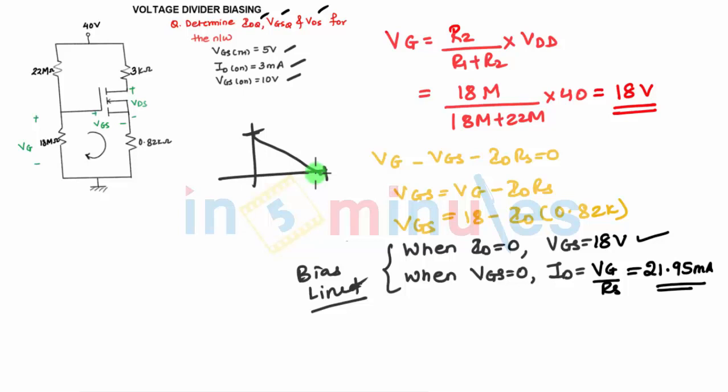Now for the transfer characteristics, we need to find the value of KN. The equation for K is ID upon VGS on, the whole square. So we can find the value of K as 0.12 into 10 raised to minus 3 ampere per volt square.